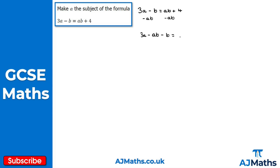That gives us 3a - ab - b = 4. Now I want to get rid of the minus b on the left hand side, so I add b to both sides. On the left hand side we now get 3a - ab, and on the right hand side we get b + 4.